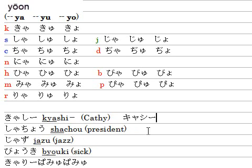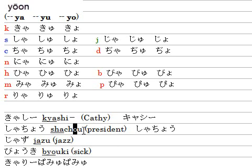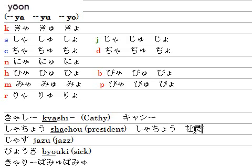The next word is Shachou, which means president. You type S-H-A or S-Y-A, then C-H-O for cho, giving Shachou. It has a long vowel because O and U are in a row, so it becomes a long O sound — Shachou. And Shachou has kanji as well.